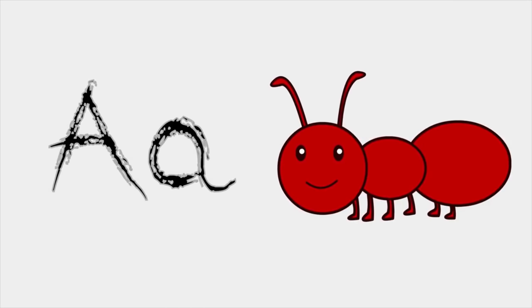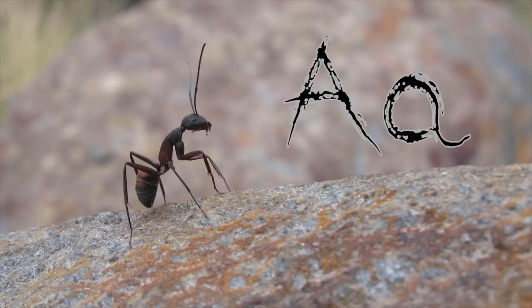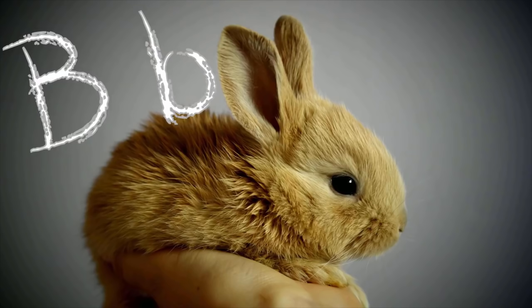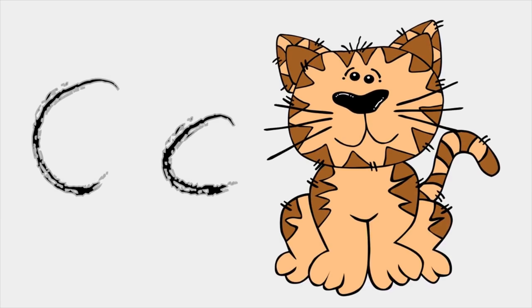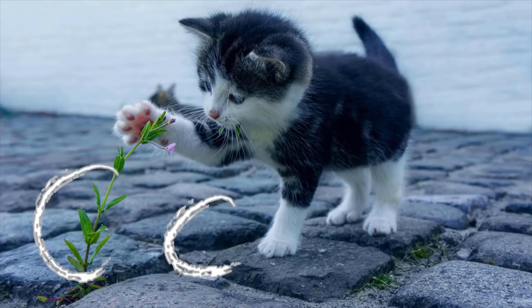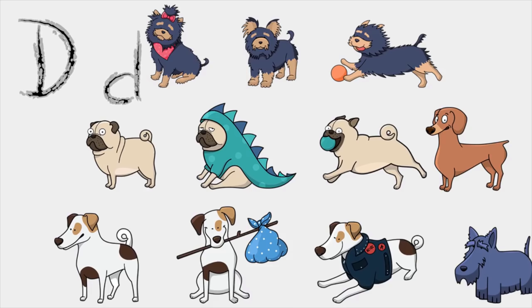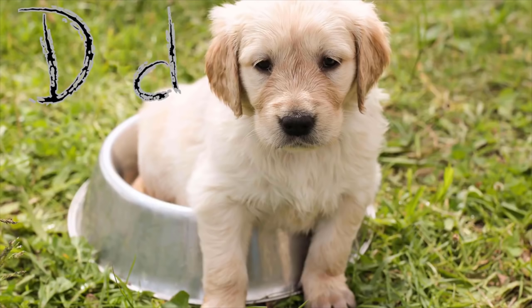A is for Ant, a-a-ant. B is for Bunny, b-b-bunny. C is for Cat, c-c-cat. D is for Dog, d-d-dog.